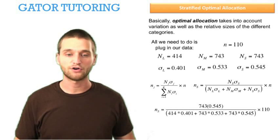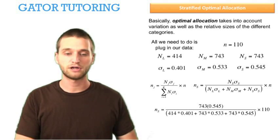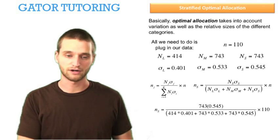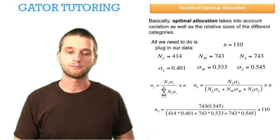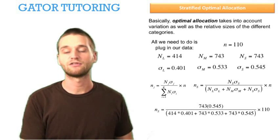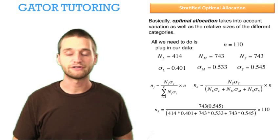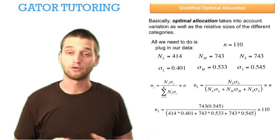So now we just need to plug in our numbers. We see 743 and 0.545 go up top, because again, those are for the small category. And all of them go in the bottom. We just multiply the population size times the standard deviation, and add them together, and multiply by 110, which is the new size of the overall population.